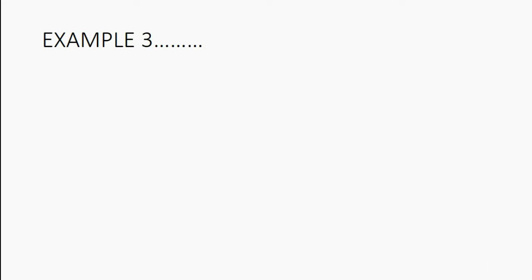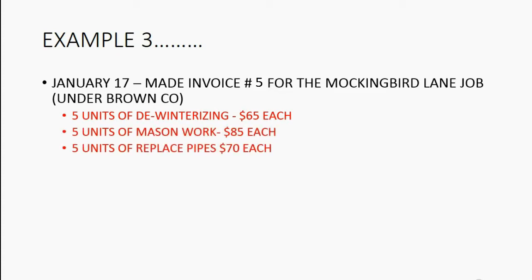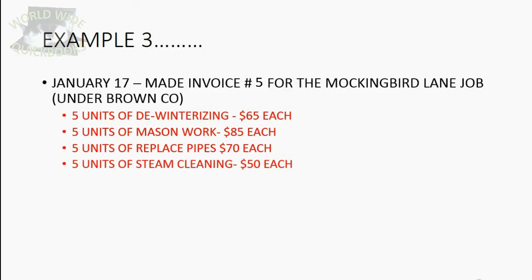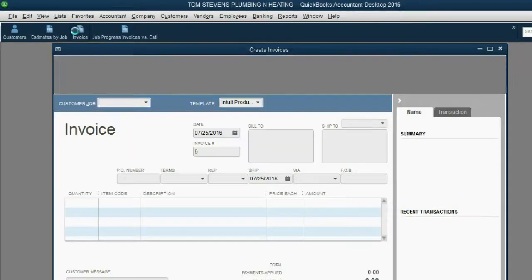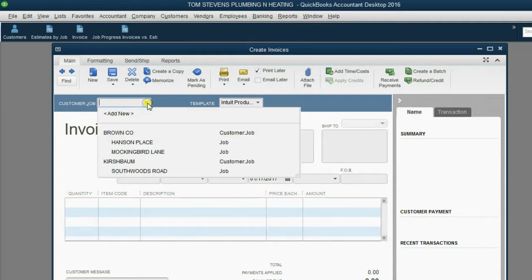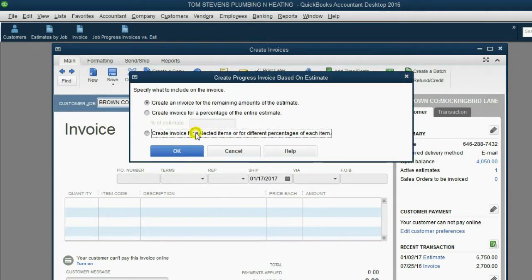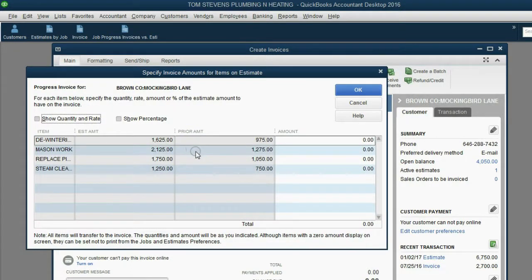For example three, on January 17th we made another invoice for the Mockingbird Lane job under Brown Company. However, this time we're not going to tell QuickBooks what percent we completed. Instead, we're going to tell QuickBooks how many units of each service have been performed since the last invoice and see if QuickBooks can figure out the percent and calculate the overall percent complete. We open up the invoice window, move the date to January 17th 2017, choose the Mockingbird Lane job and the same estimate, but this time we click Select Items and click OK.